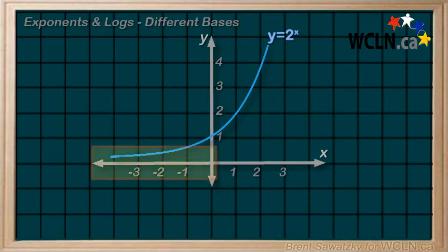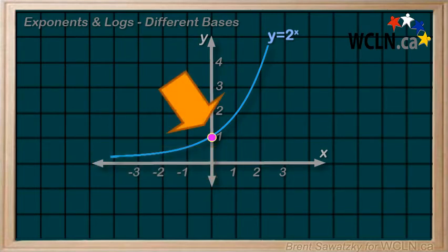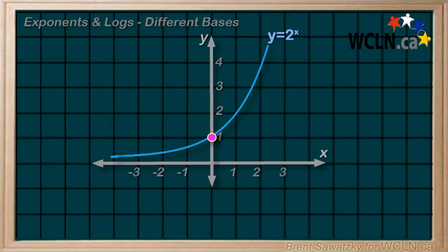We have the asymptote over here at y equals 0, and our graph has a y-intercept right here, when x equals 0, y equals 1. Anything to the 0 is 1, so the point is (0,1). Also, when x is 1, y equals 2 to the 1, or 2.